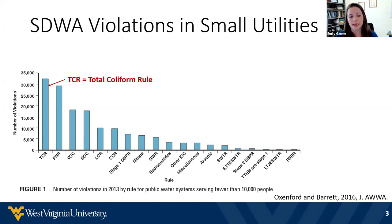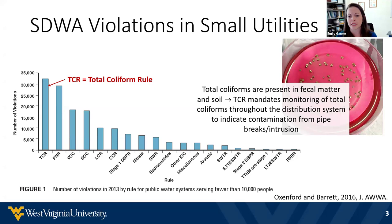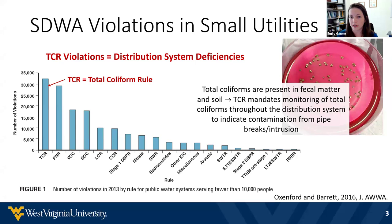Total coliforms are bacteria present in fecal matter as well as soil. The total coliform rule mandates that utilities perform monitoring for these bacteria throughout their distribution system as a way to indicate if there's contamination from pipe breaks or intrusion. These total coliform rule violations indicate issues in the distribution system rather than issues with source water quality or the treatment process. This highlights that managing distribution system water quality is a big challenge for small utilities in particular.